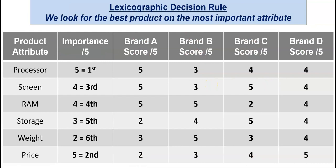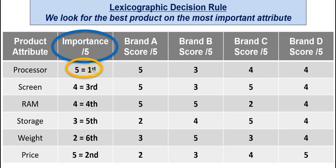The lexicographic decision rule requires us to rank the attributes in order of importance. We have two attributes both scored five, so we must decide which is the single most important one. I've assigned rankings from one to six, making processor the most important attribute. We then go across and find which brand scores the highest on that attribute — that is brand A, so brand A is selected.